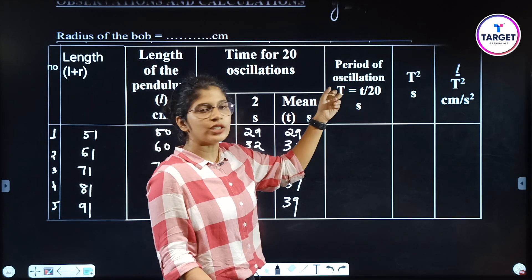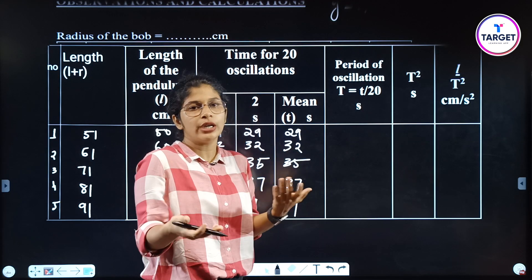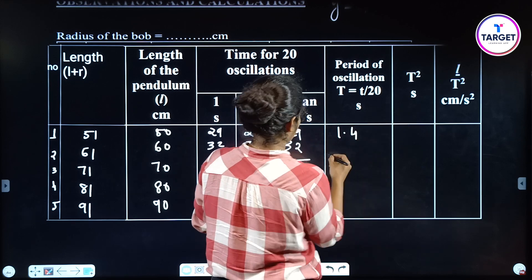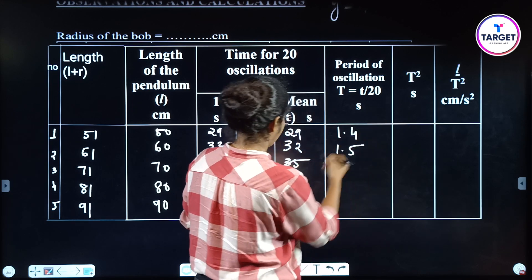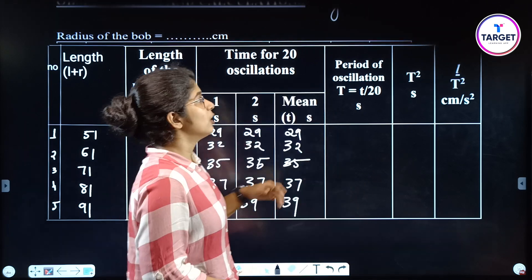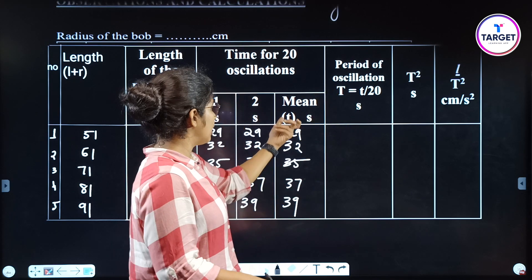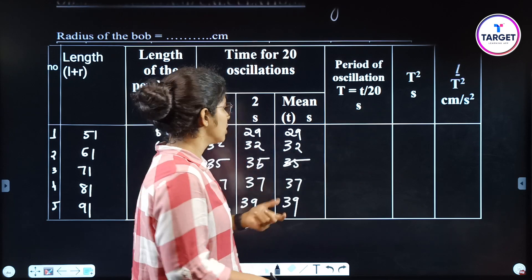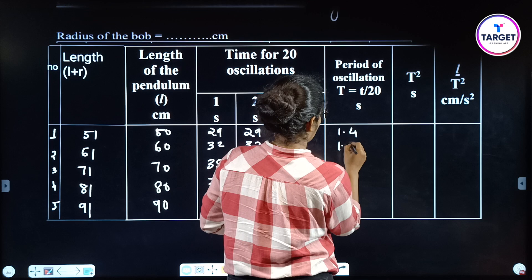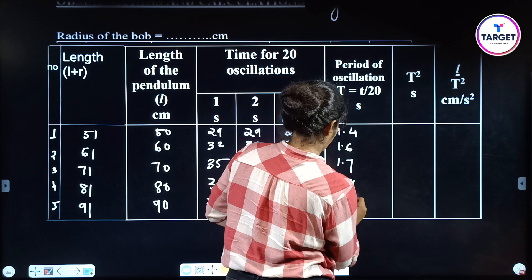Period of oscillation T equals the mean time divided by 20. So we get T values of 1.4, 1.5, 1.6, 1.7 for different lengths. From these readings divided by 20 we get 1.4, 1.6, 1.7, 1.8, 1.9 seconds.